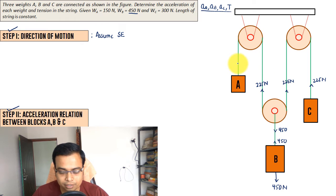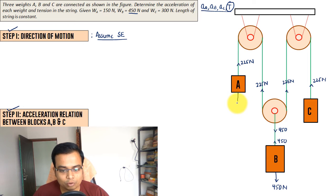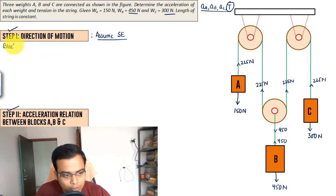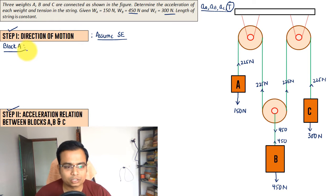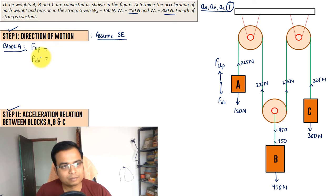Under the dynamic case, the tension will be different — that's what we'll work out. The weight of block A is 150 newtons and block C is 300 newtons. For block A, we compare forces upward versus downward. Whichever side has the greater magnitude of force, the block moves in that direction.